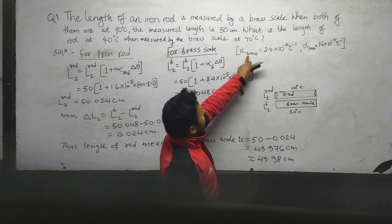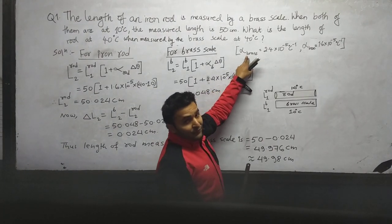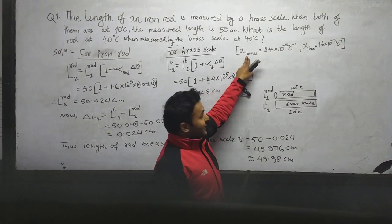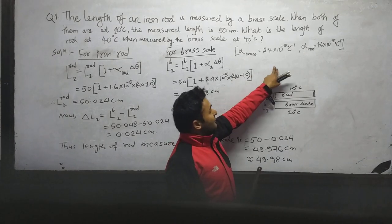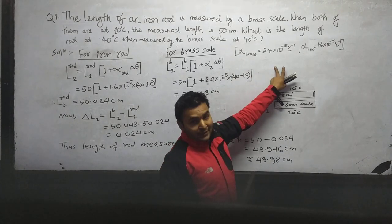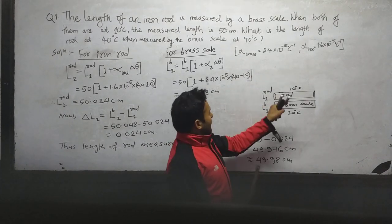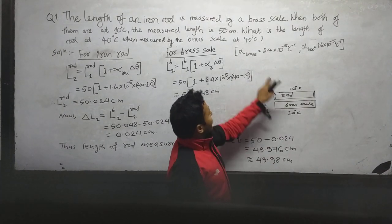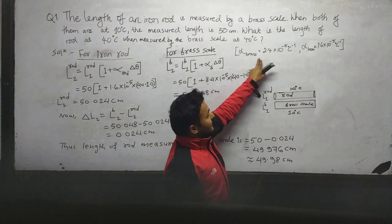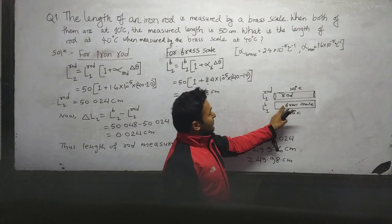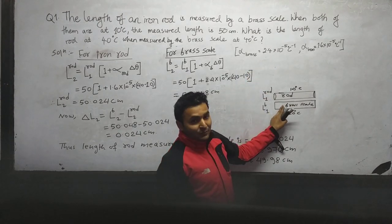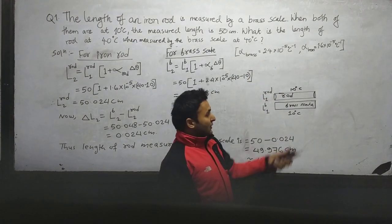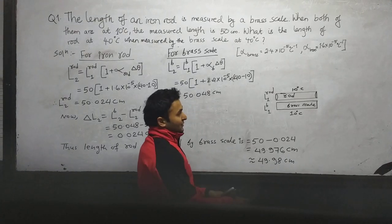If the value of alpha is greater, then the expansion will also be greater. For brass, the value of alpha is greater, so brass expands more than that of the rod when they are heated.